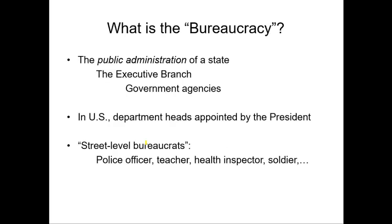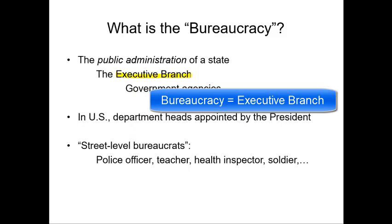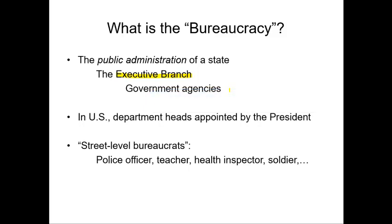What we're talking about with the bureaucracy is the public administration of a state. This is the executive branch — in the United States, the president is in charge of all the various government agencies and departments. For example, in the UK parliament, the cabinet would be over the administrative functions of the state. In the United States, we have three branches with checks and balances, and the bureaucracy is the part underneath the president in the executive branch.